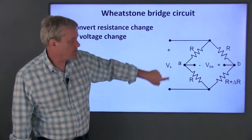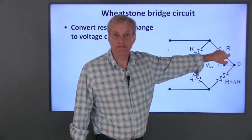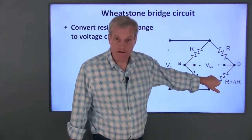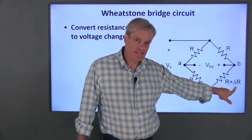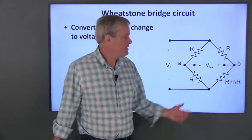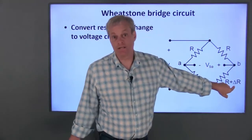These three resistors are all fixed and they have the same resistance R. This resistance varies. It's R plus some resistance change delta R. We want to find the relation between this voltage difference V sub BA and the resistance change delta R.